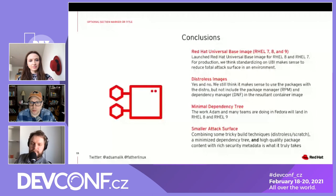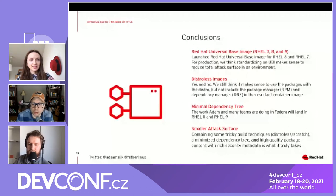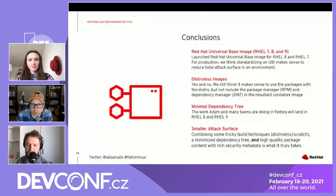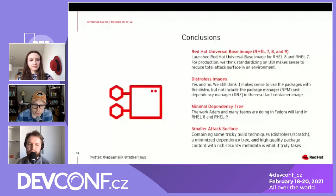Q: Is UBI 9 out? A: No. UBI 9 will be based on RHEL 9, so when RHEL 9 drops we'll release UBI 9 at the same time. The closest thing you can see today is Fedora — if you play with the Fedora images you'll get very close to what you'll have in RHEL 9.